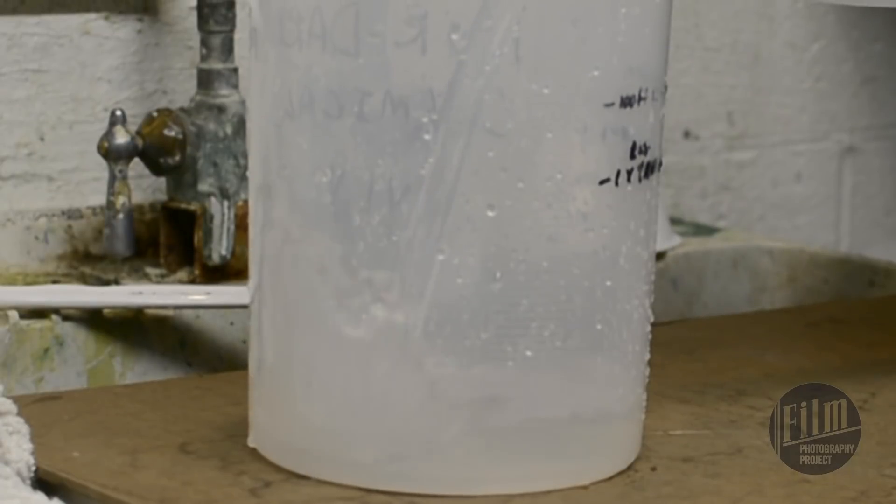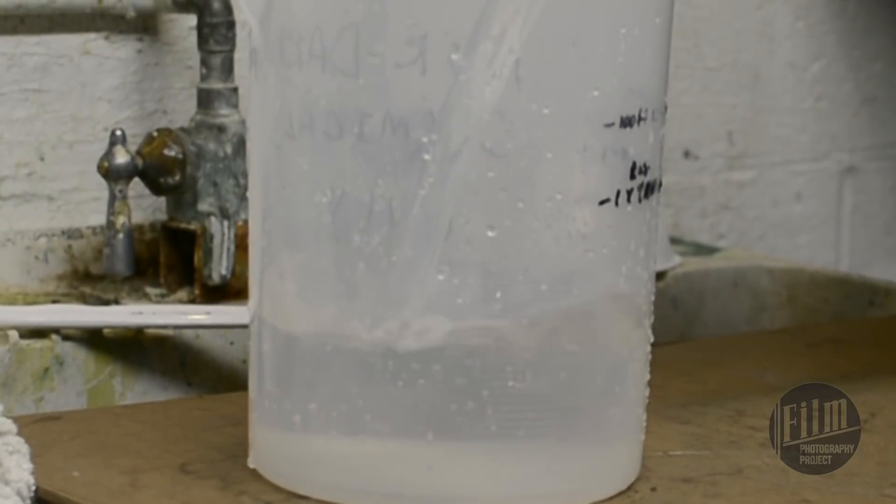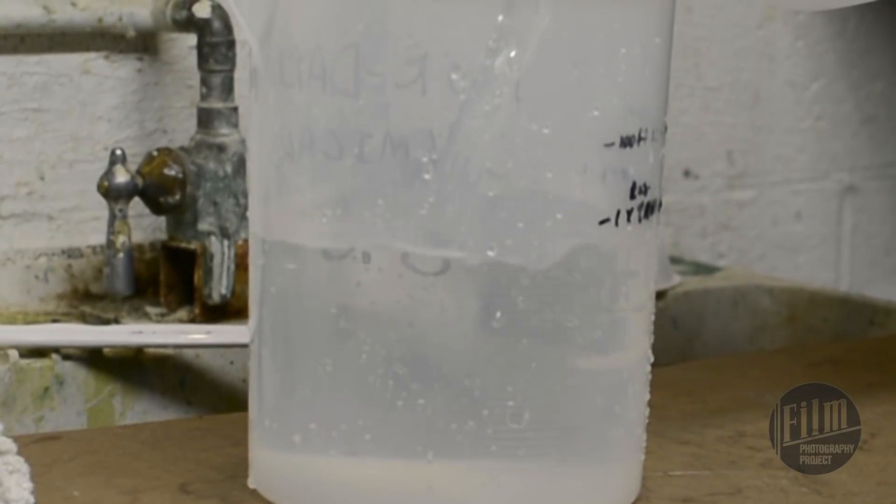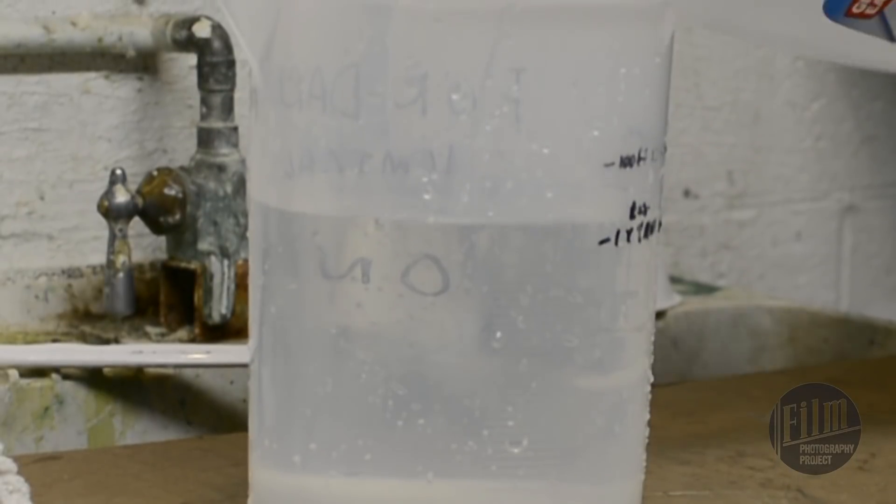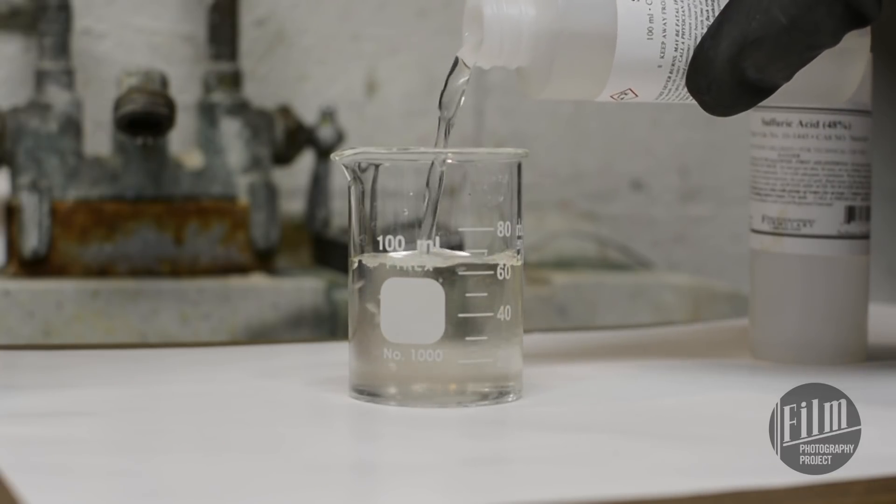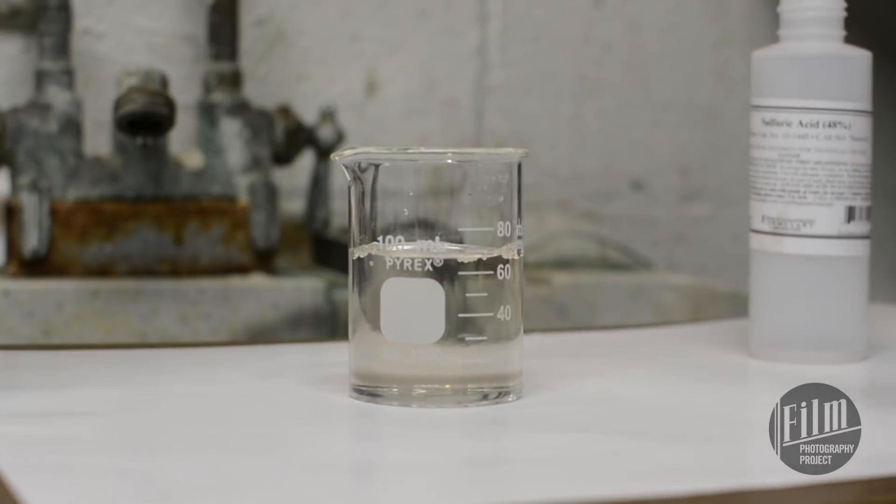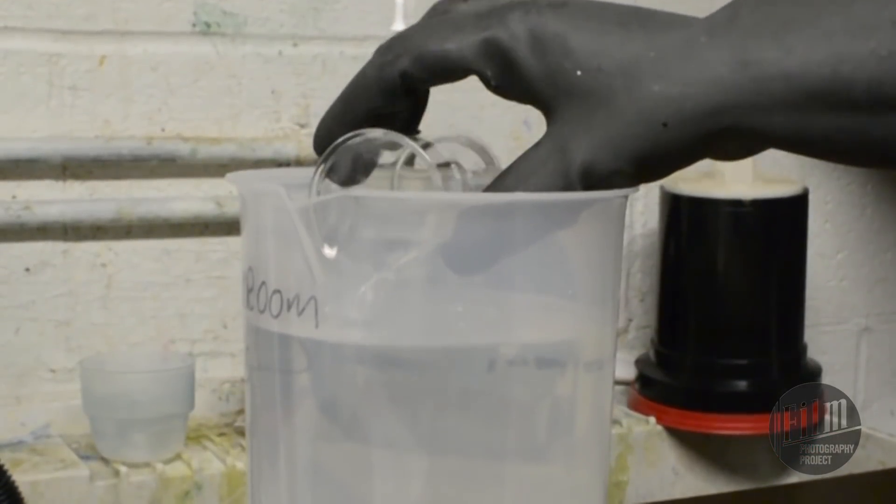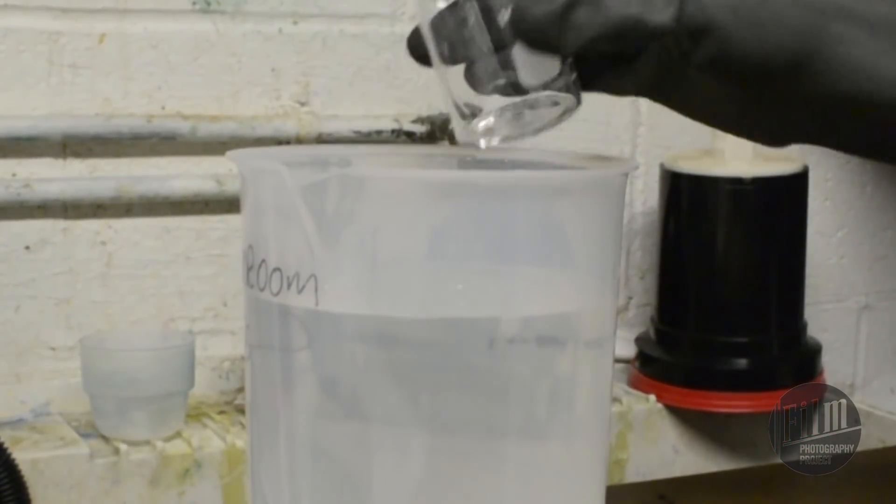Next is the bleach. Measure out 1500 milliliters of water. Then measure 70 milliliters of sulfuric acid. Make sure you're wearing your gloves and goggles. Carefully add the acid to the water. Never do it the other way around. Set the water solution aside.